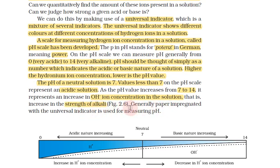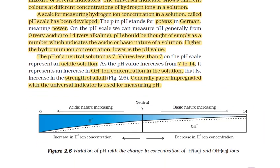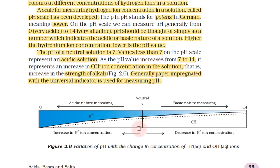Paper impregnated with the universal indicator is used for measuring pH. This is the pH graph showing variation of pH with change in concentration of hydrogen and OH⁻ ions. This is neutral at 7. Zero to 7 is acidic. Seven to 14 is basic. Exactly 0 is highly acidic. Exactly 14 is highly basic.